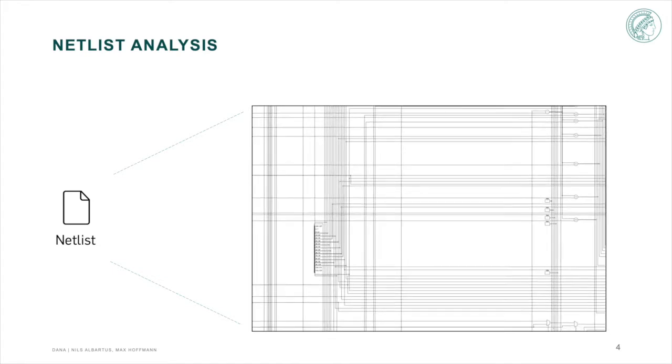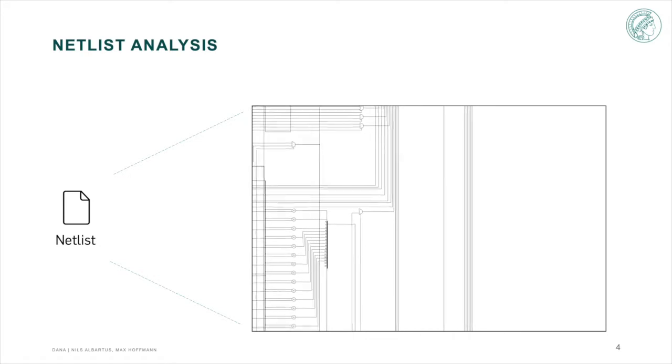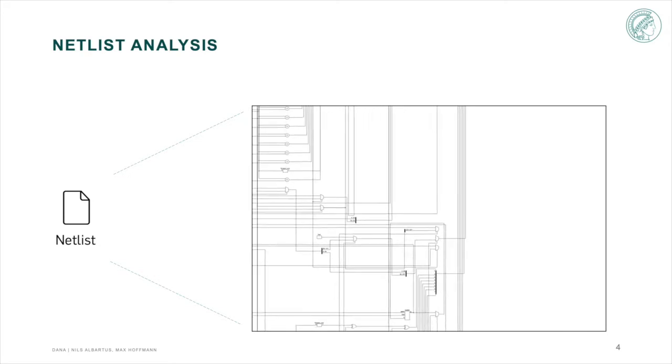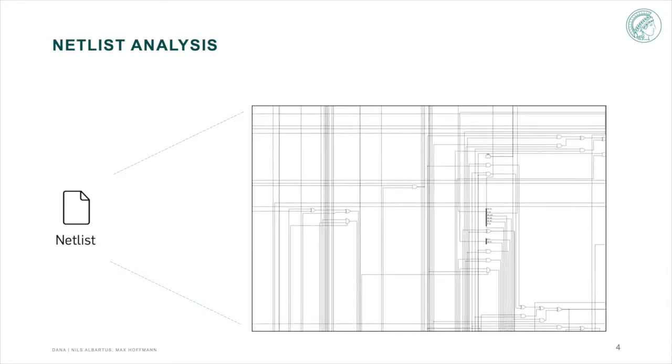As seen here, the netlist can be compared to a circuit diagram, where we can only see the gates and the connection between them. And since modern chips can have hundreds, thousands or even millions of gates, understanding the netlist can be a complex process.